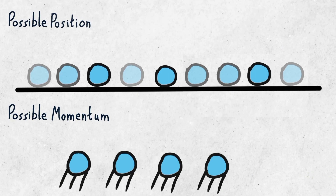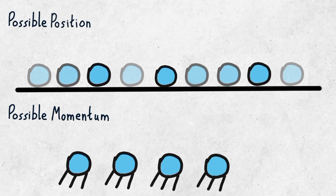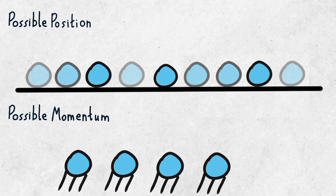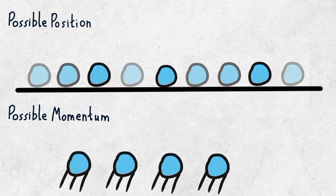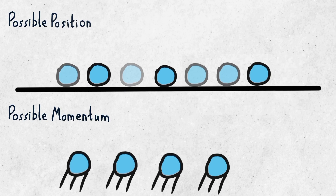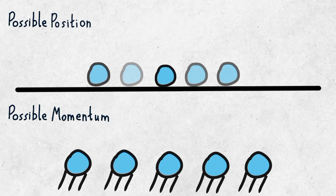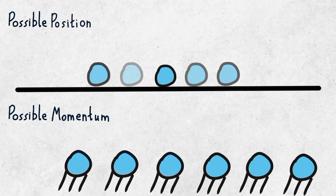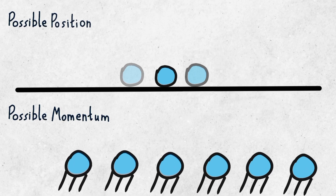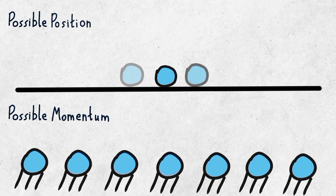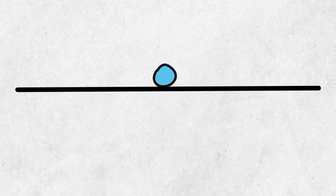Particles have several possible positions and momentum. The principle comes into play where the more you limit the position possibilities, the more the momentum possibilities increase. The more you know about the particle's position, the less you know about its momentum, and vice versa.